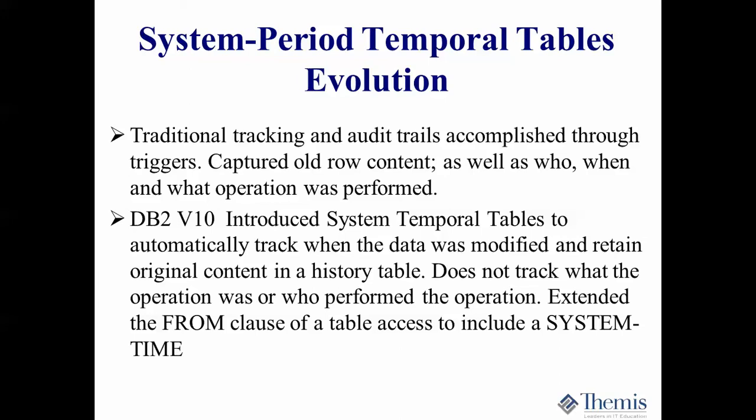IBM finally in version 10 came out with temporal tables, and the system time tables would automatically track the prior contents and put them in a history table automatically. All you had to do is define the history table and then link the base table to the history. They also extended the FROM clause to include system time, so you could specify a time or range of time, execute a SQL SELECT from the base table, and DB2 would union the rows from the base and the history that fell in that time range.